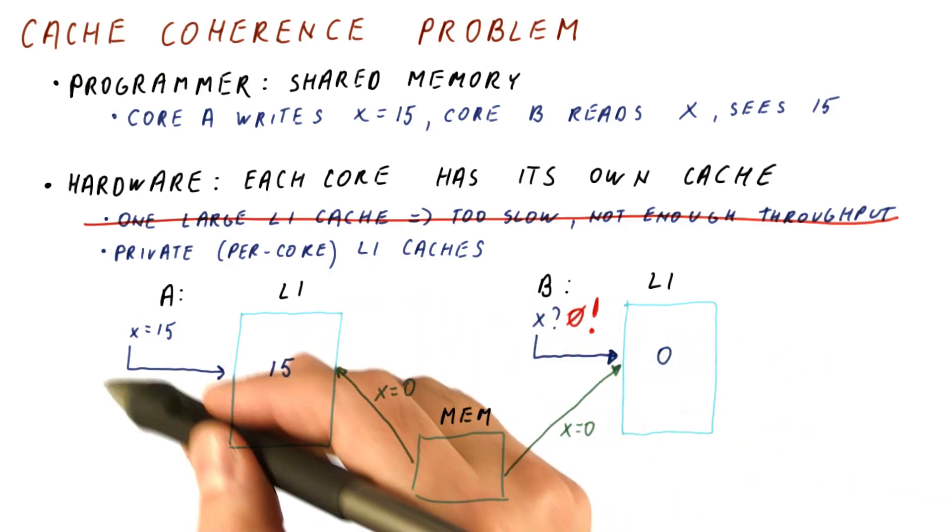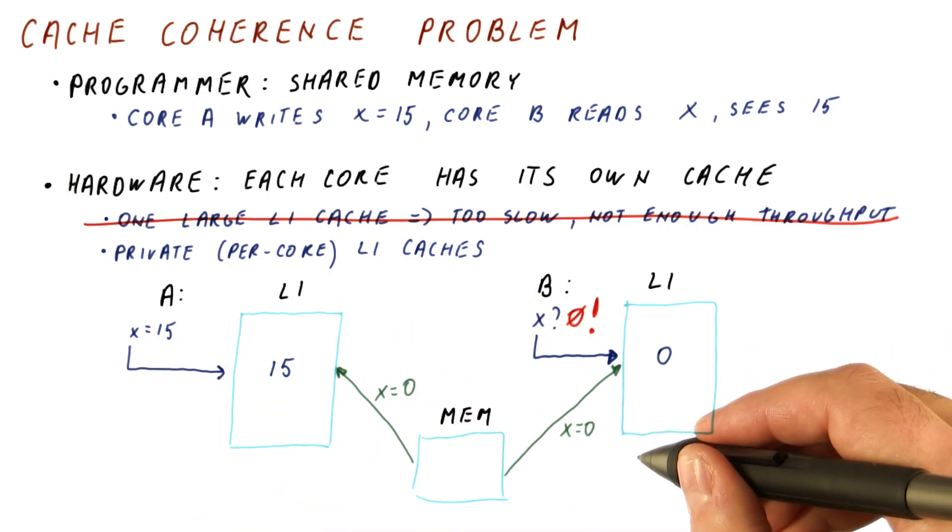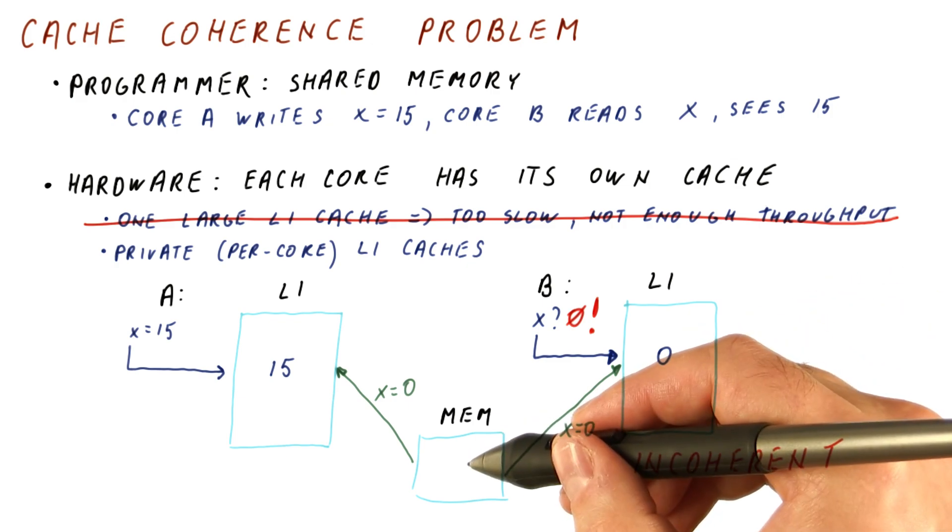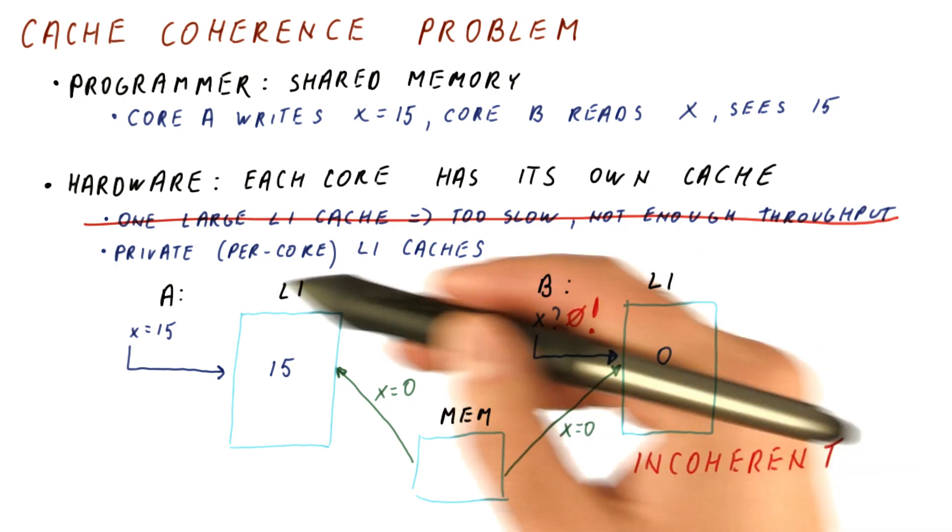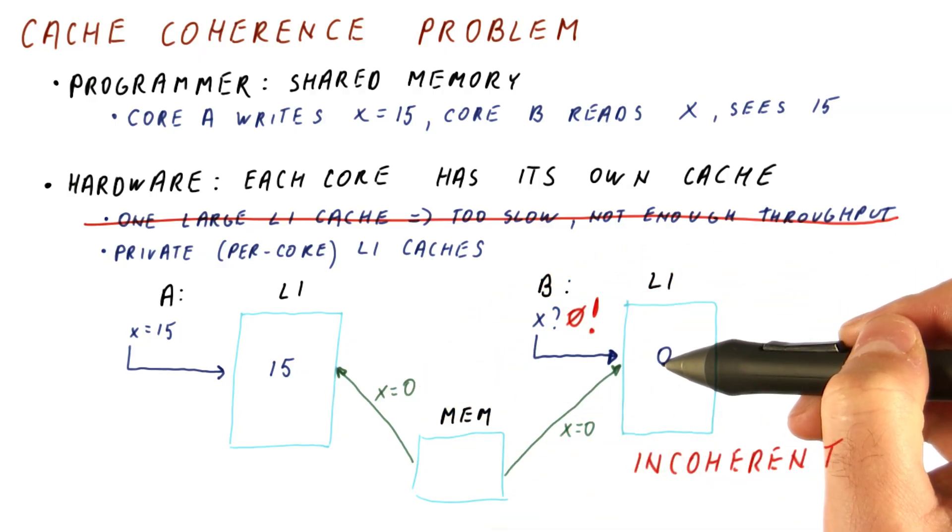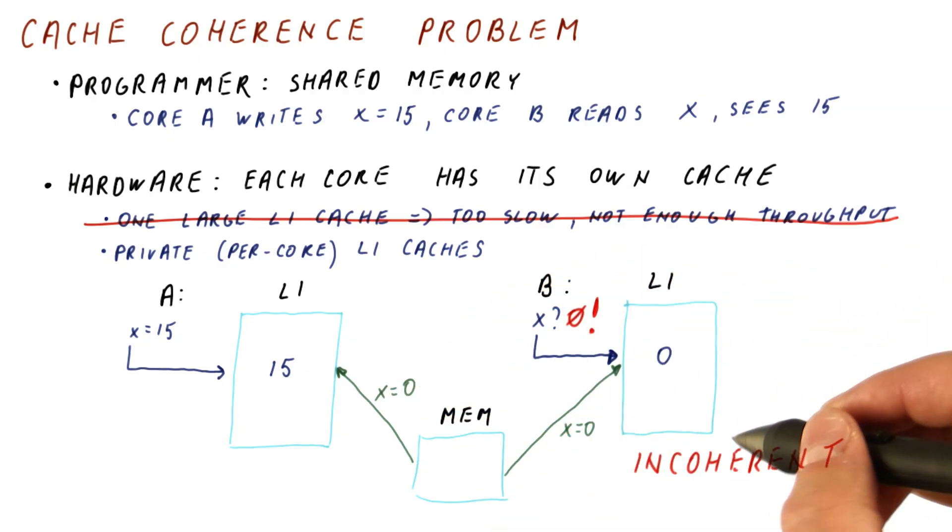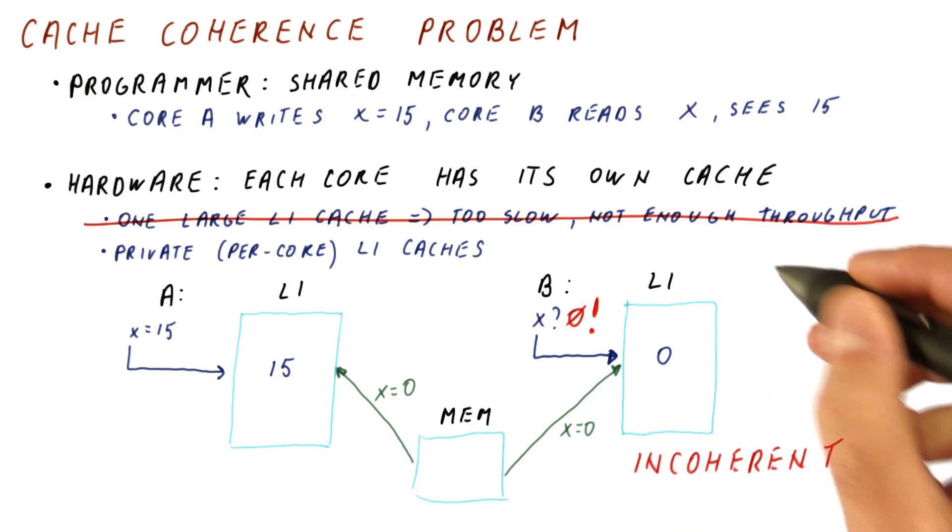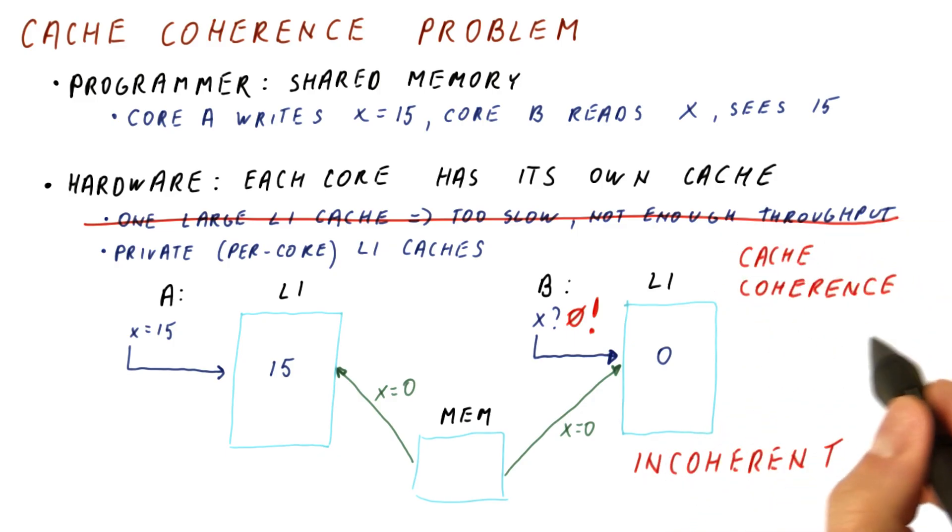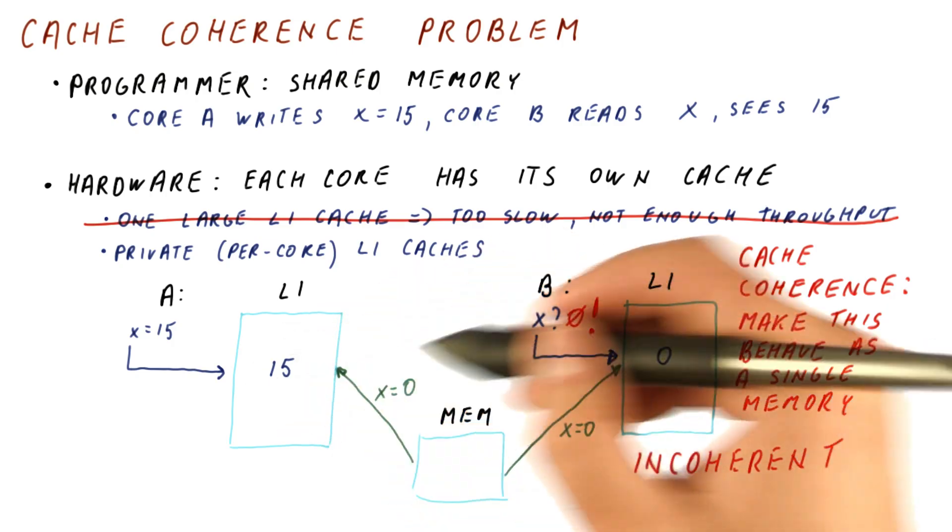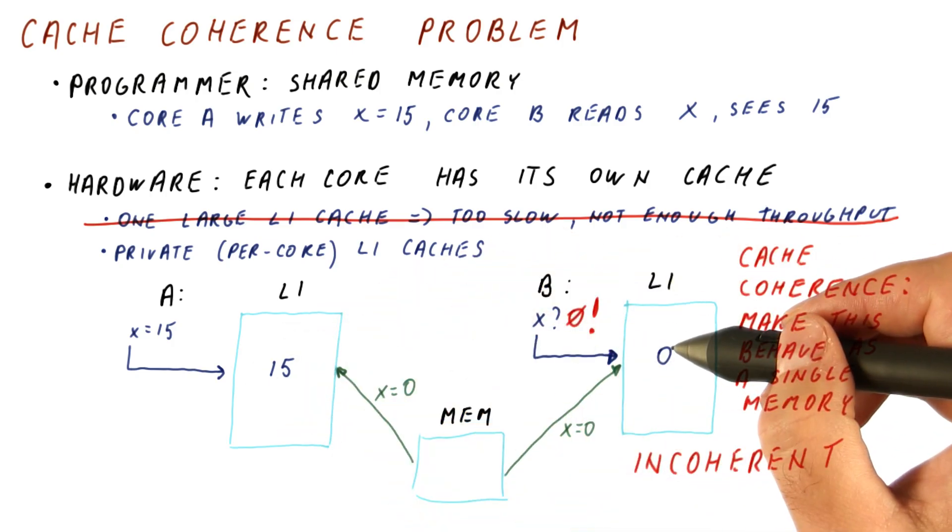When we get in a shared memory system behavior like this, we say that it is incoherent. The same memory location as seen from different cores can have different values, which is not what should be happening in a shared memory. In order to not get an incoherent system, we need an active approach to cache coherence that will make this whole thing behave as a single memory, even though in reality there are multiple copies of the data floating around.